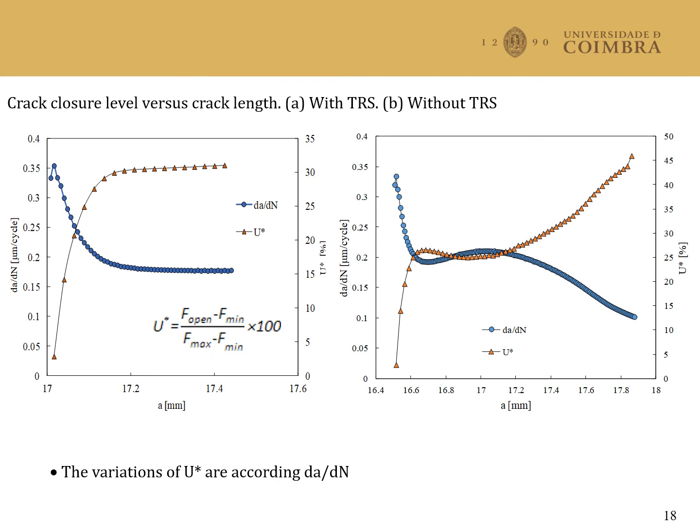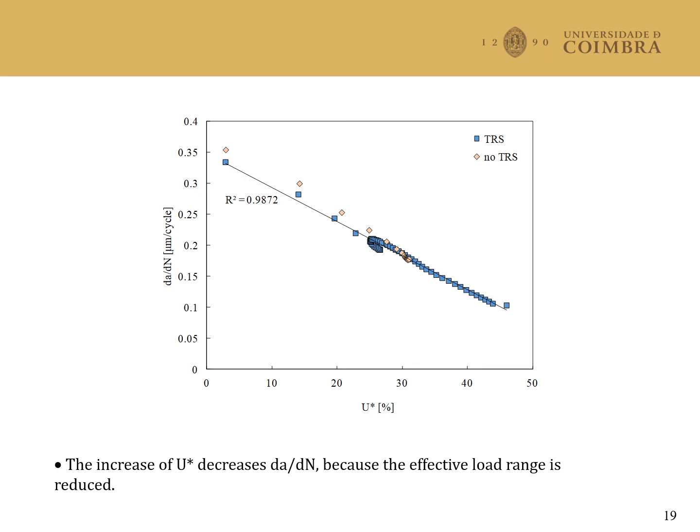This slide compares the variations of da/dN with corresponding variations of crack closure. The crack closure level is quantified by the parameter U*, which is the percentage of the load cycle during which the crack is closed. Both with and without thermal residual stresses, there is a perfect match between the variations of da/dN and the variations of crack closure, which indicates that this phenomenon explains the trends observed. The increase of U* decreases the effective load range and therefore da/dN, as could be expected. An interesting linear trend is observed.